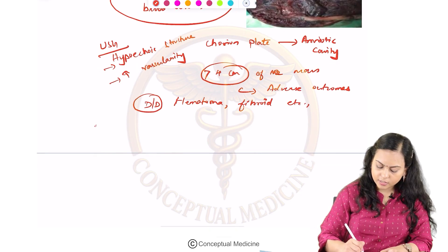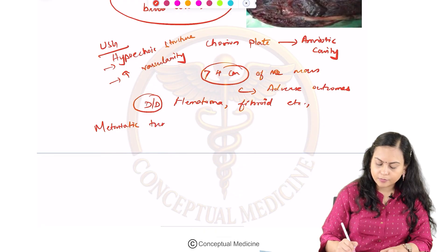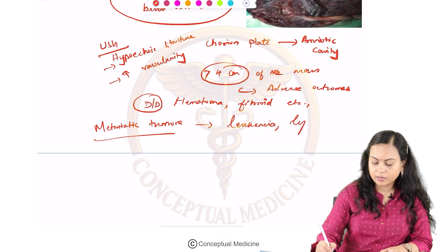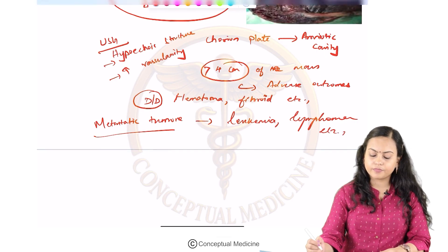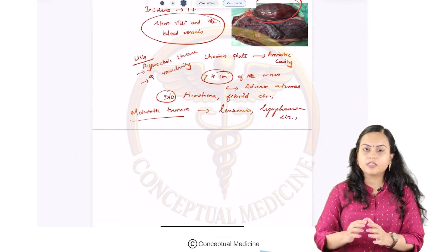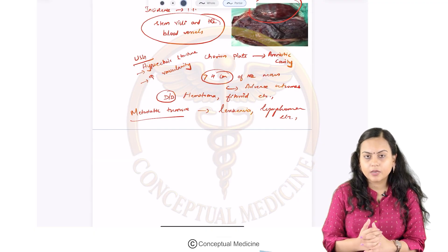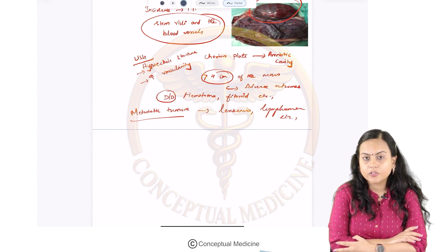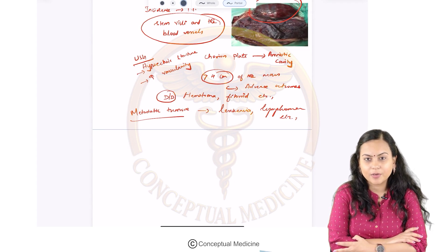Not only this, there can also be metastatic tumors that come to the placenta, such as leukemia, lymphoma, etc. With this we are completing the discussion on placental disorders. Until we meet in the next video, take care, happy learning, and bye bye.